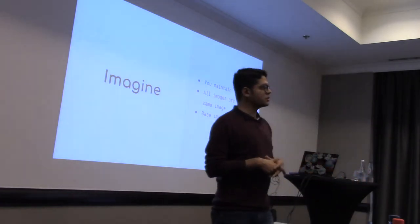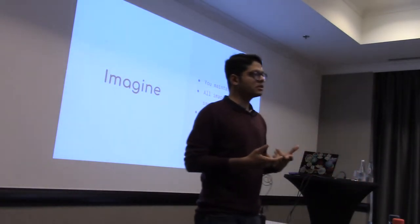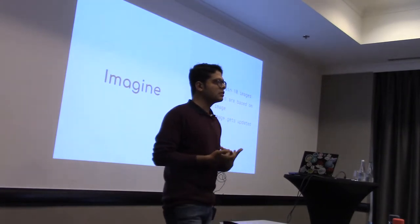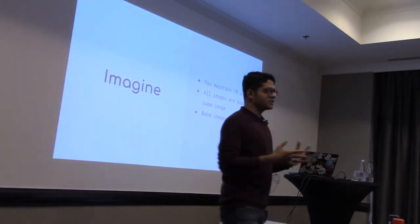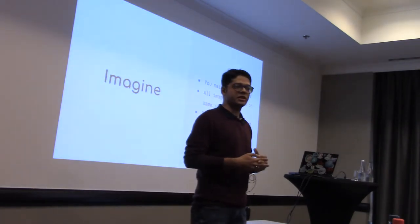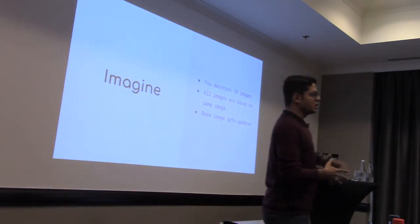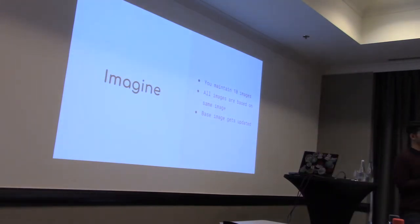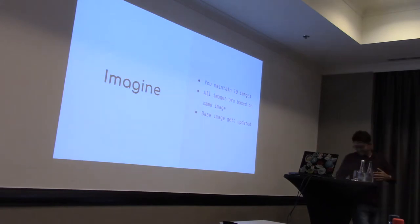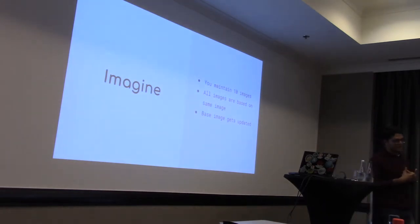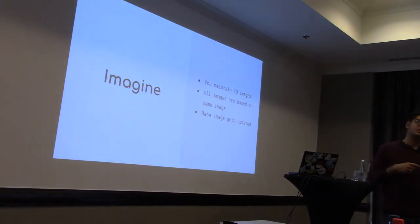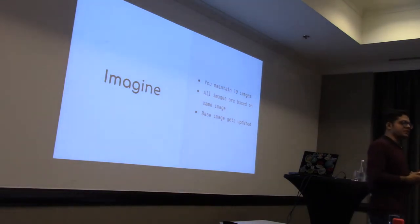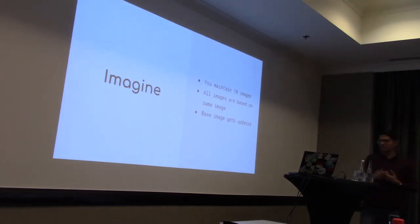If you are using Docker Hub, then you probably trigger a manual build. Has anyone else come across this kind of scenario where you have multiple container images which are children of a particular parent image? In the CentOS world, we do have this kind of scenario. If you go to github.com/centos/centos-dockerfiles, you'll see a number of container images which are all dependent on the same parent image, and the number is pretty large.